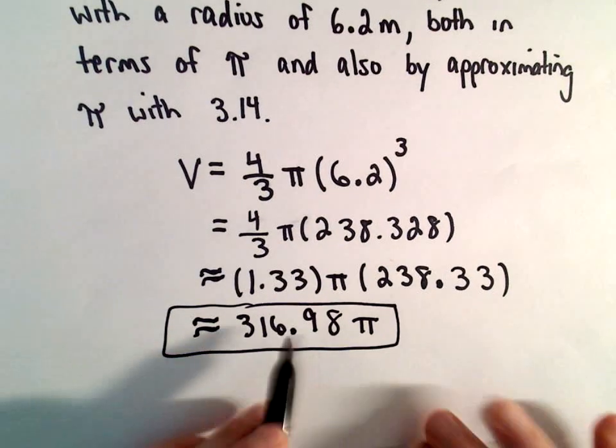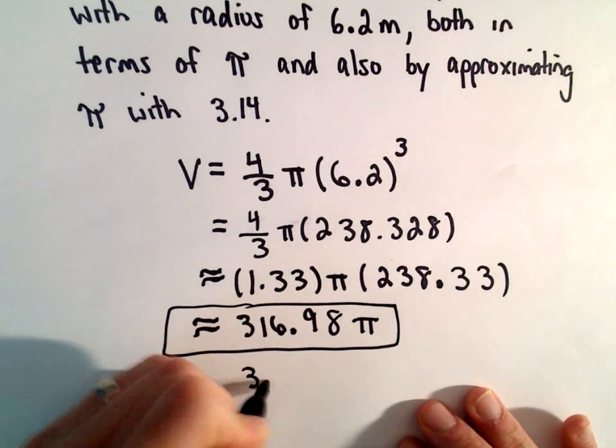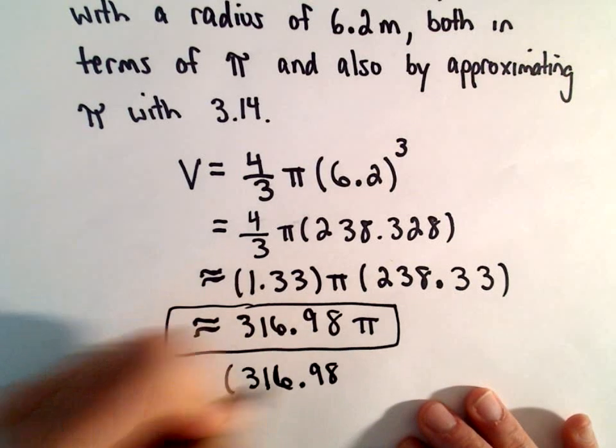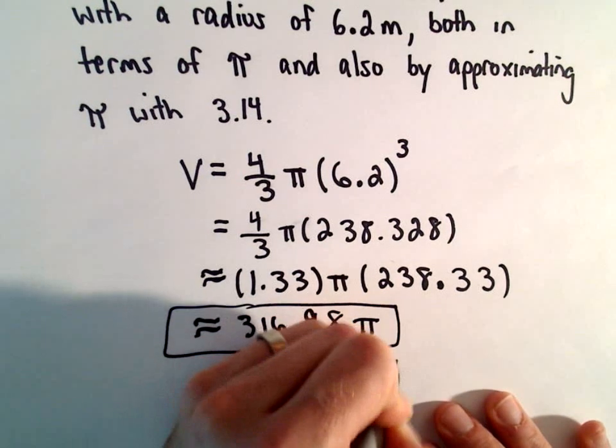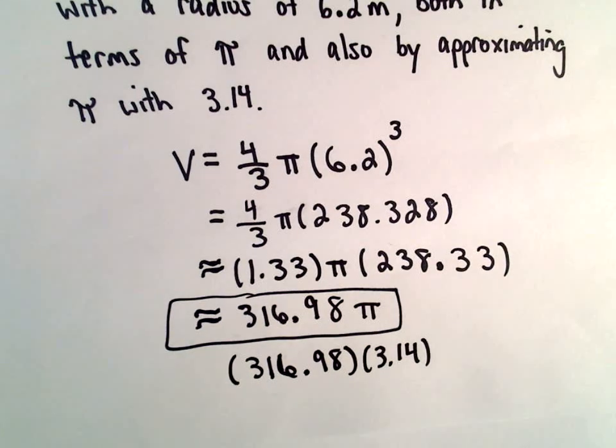Well if we actually change that, if we change pi into 3.14, let's see so 316.98 multiplied by 3.14.